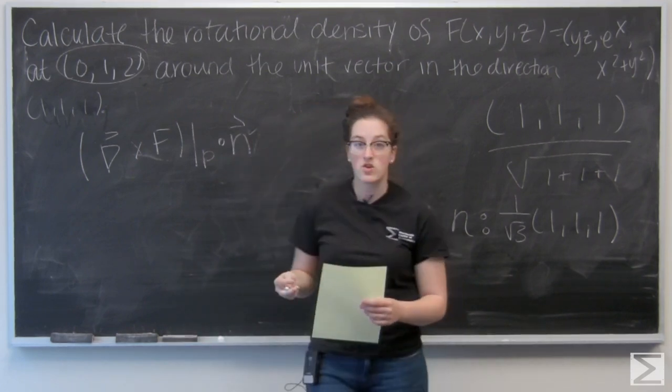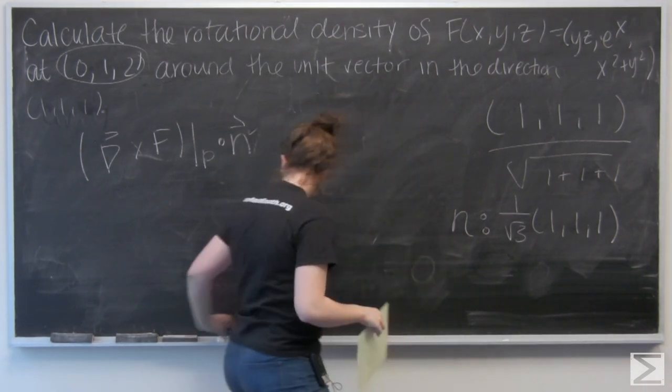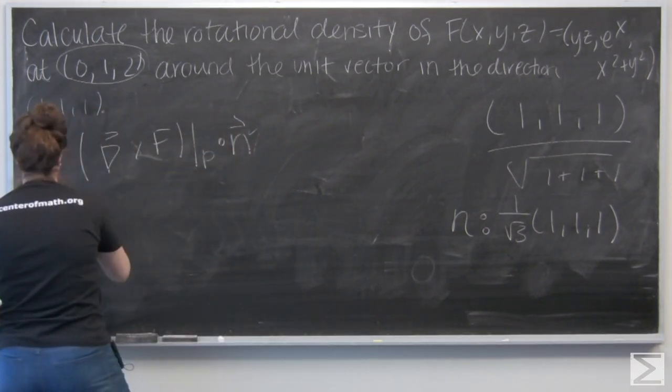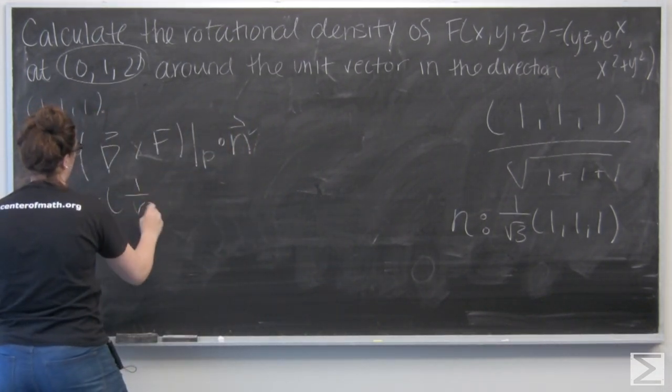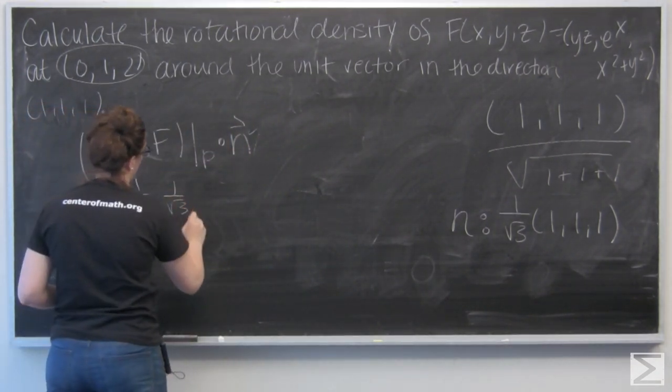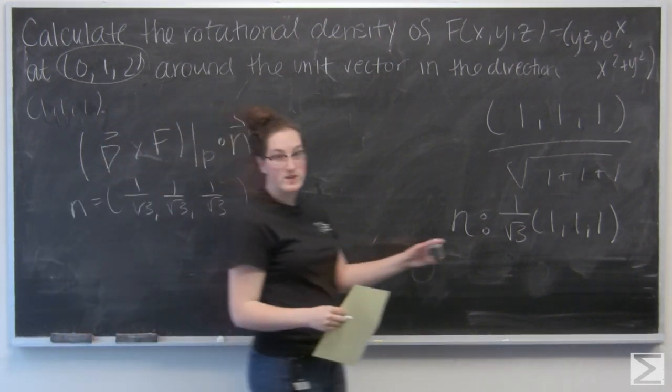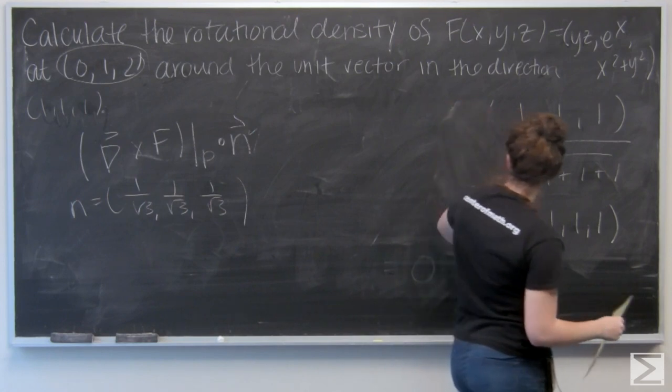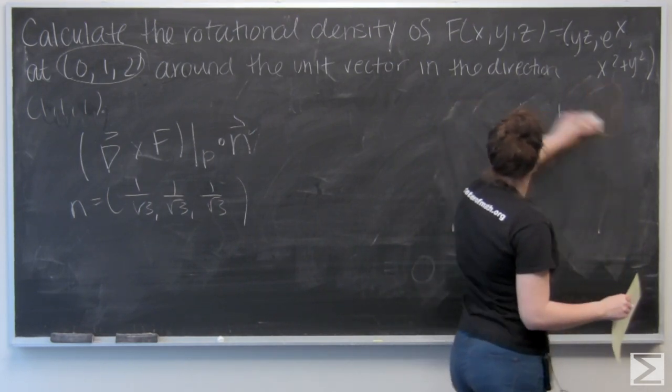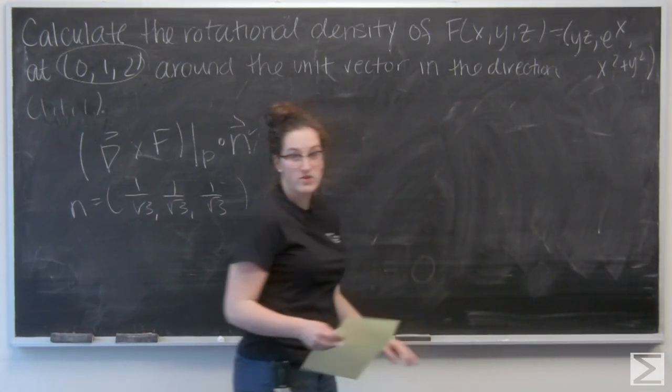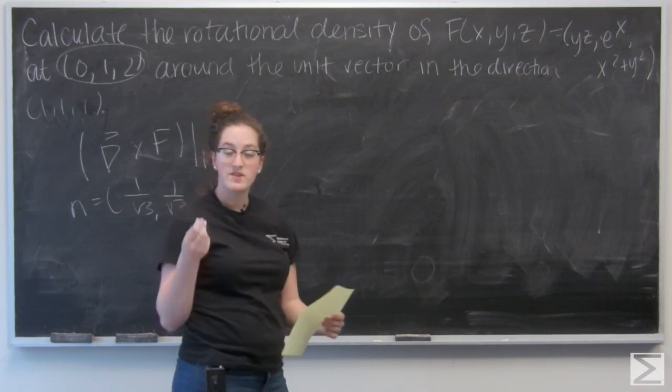So I've got that. Now I just need to find the curl of f. I'm going to erase this normal vector so I have a little bit more space. And to find the curl of f, I'm going to use a matrix and cofactor expansion.